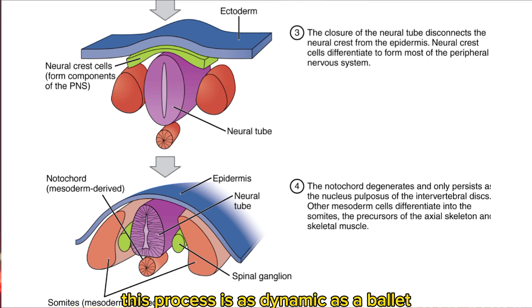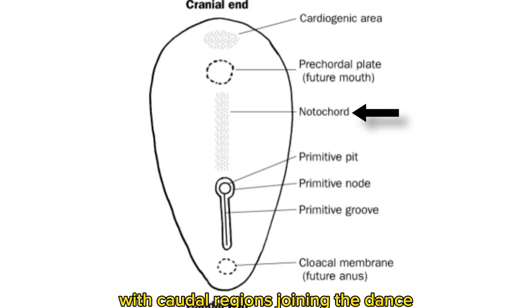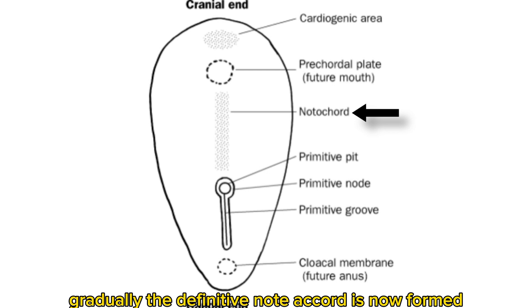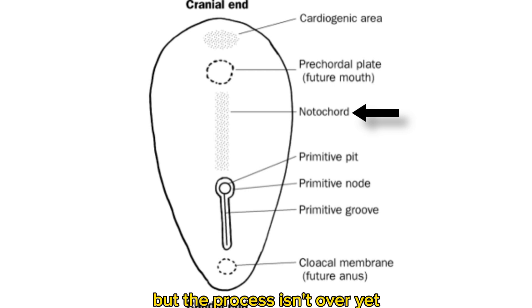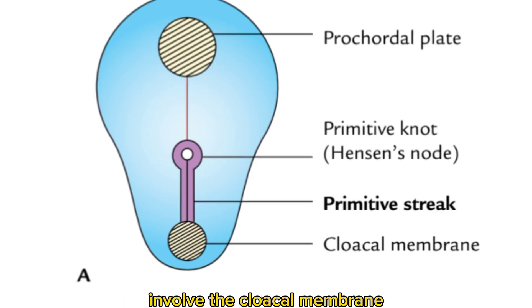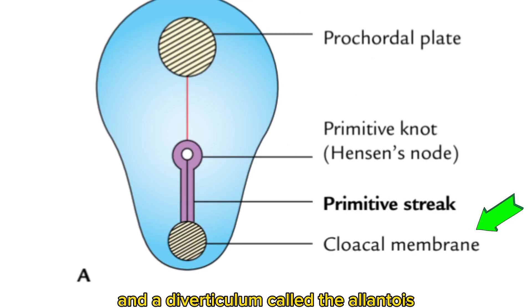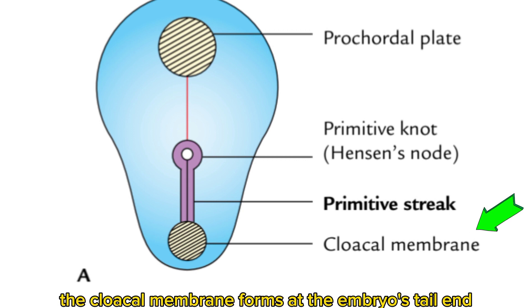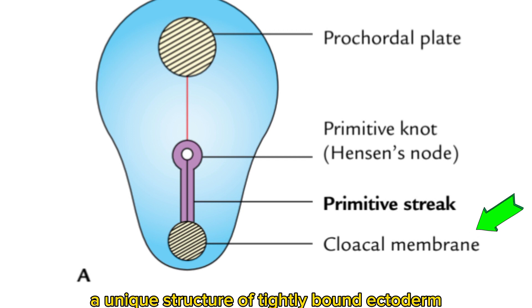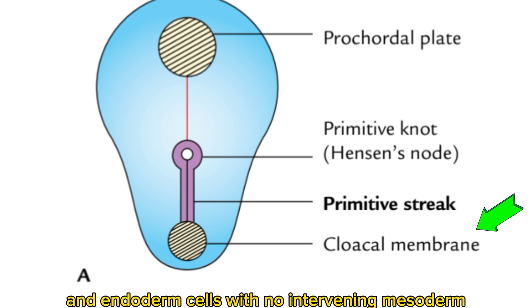This process is as dynamic as a ballet. The cranial end forms first, with caudal regions joining the dance gradually. The definitive notochord is now formed, but the process isn't over yet. The final steps involve the cloacal membrane, which forms at the embryo's tail end — a unique structure of tightly bound ectoderm and endoderm cells with no intervening mesoderm.